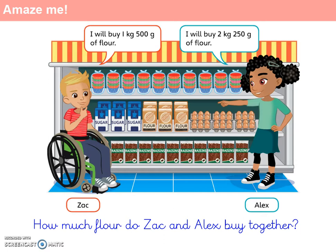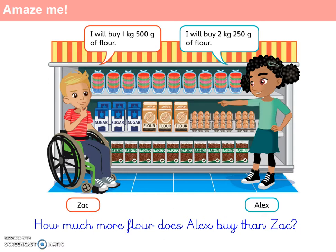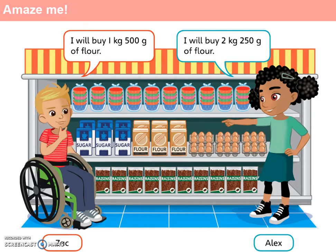For question 1b we're asked: how much more flour does Alex buy than Zach? Again, what strategies can you see that could help work this question out? Pause the video and try to answer both questions — question 1a, how much flour do Zach and Alex buy together, and question 1b, how much more flour does Alex buy than Zach. Come and join me when you're ready to look at the strategies we've used.